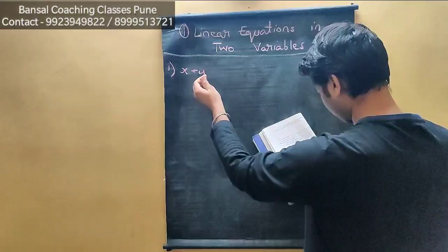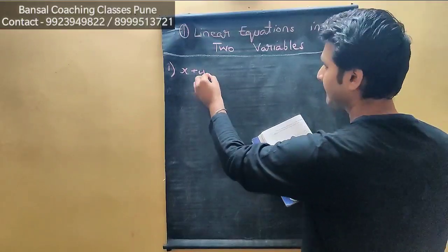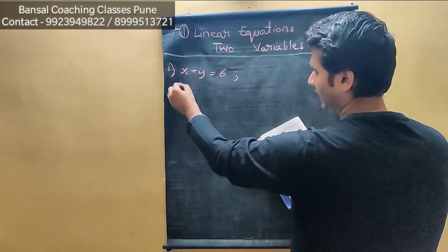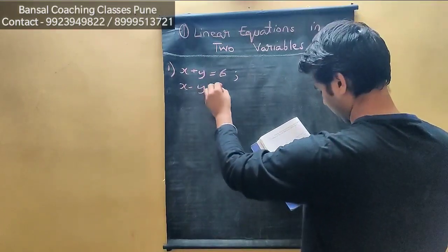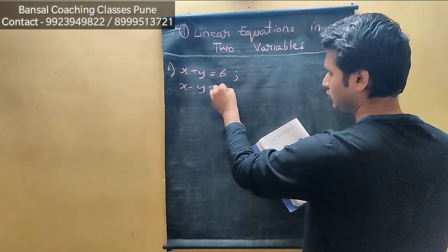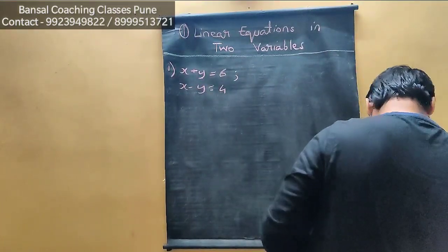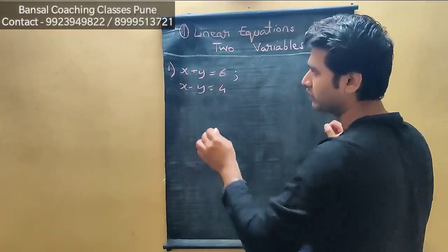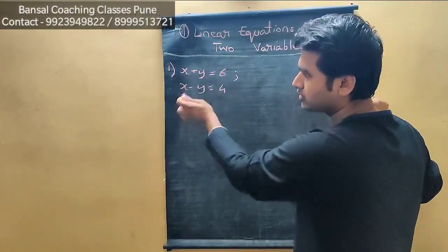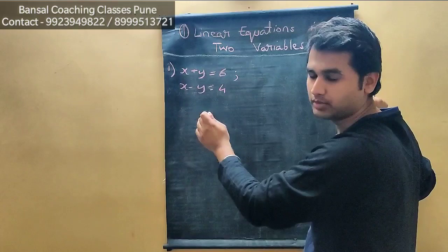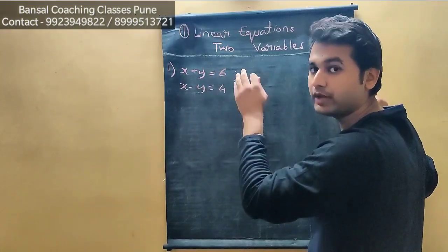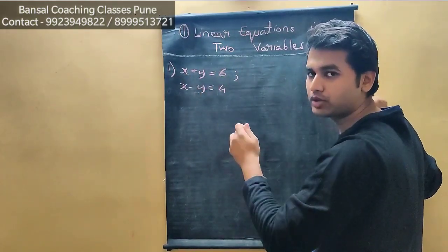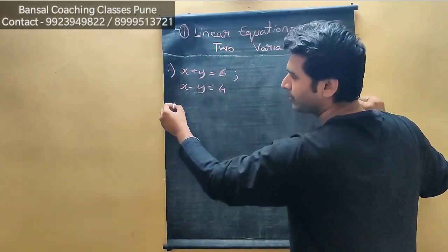So x plus y is equal to 6, and x minus y is equal to 4. We have to solve these two equations. Now we have to prepare a table for both equations. We need to find out 3 values each for x and for y.